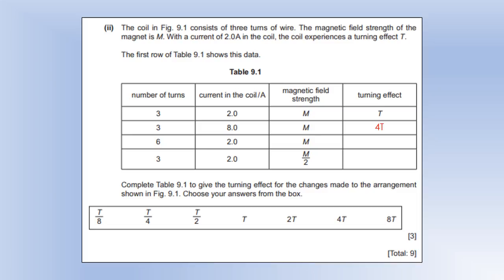It's the same thing with the number of turns. We've doubled the number of turns, kept everything else the same, so we'll have doubled the turning effect. Then this next one, we've kept the turns and current the same, we've halved the magnetic field strength, so that would halve the turning effect. All three of those properties are directly proportional.